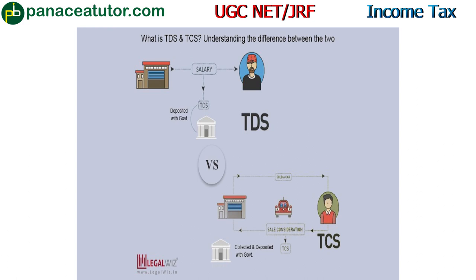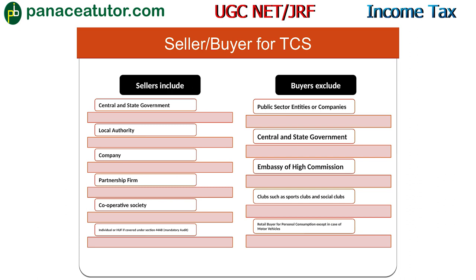Sellers and buyers are specifically defined under TCS. Sellers include: Central and State Government, local authority, company, partnership firm, cooperative society, and individual or HUF if covered under Section 44AB mandatory audit.